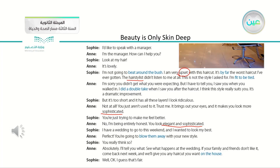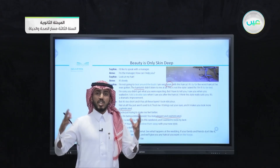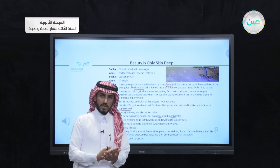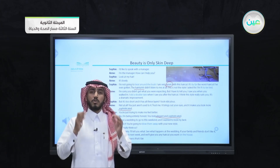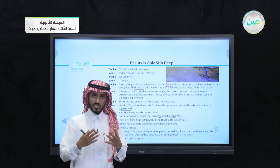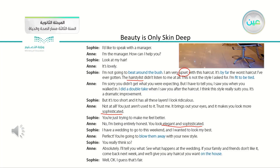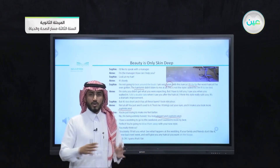Now let's talk about the expressions in blue. Sophie said 'I'm not going to beat around the bush.' This means she doesn't want to say something indirectly — it means 'I will say what I mean directly.' After that, 'It's by far the worst haircut I've ever gotten.' 'By far' means so far, or until now — it is so far the worst haircut she has ever gotten.